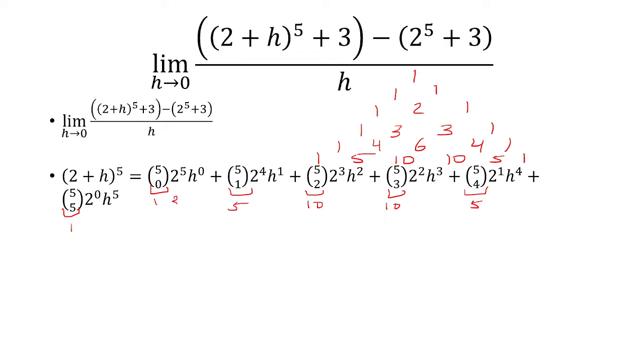Now 2 to the 5th is 32, 2 to the 4th is 16, 2 cubed is 8, 2 squared is 4, 2 to the 1st is 1, 2 to the 0 is also 1.